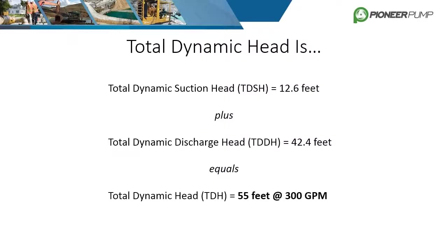Total dynamic head is the dynamic suction head and the dynamic discharge head added together. For this example, the total dynamic suction head was 12.6 feet and the total dynamic discharge head was 42.4 feet. These two added together equals 55 feet — the total dynamic head of the system is 55 feet at 300 gallons per minute.